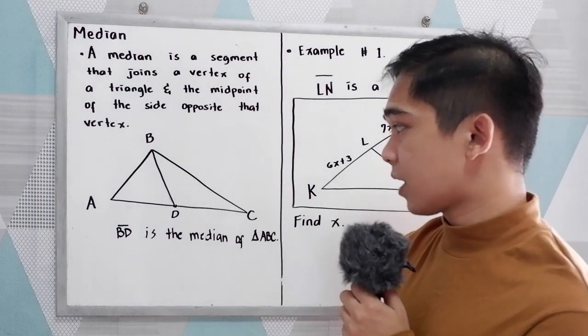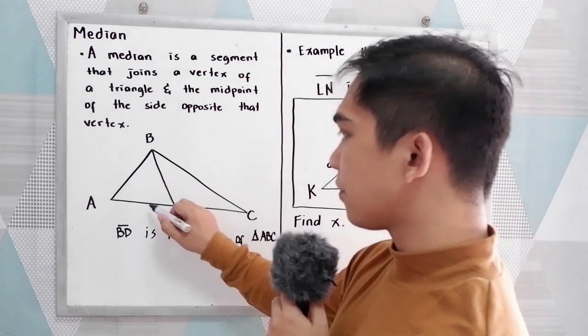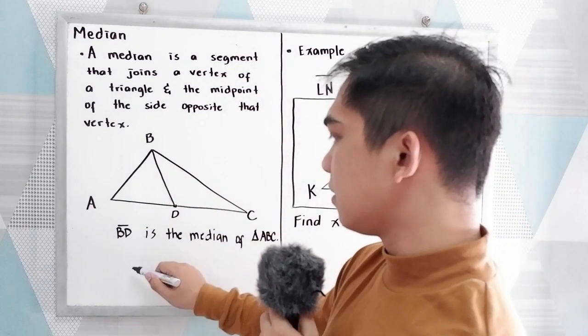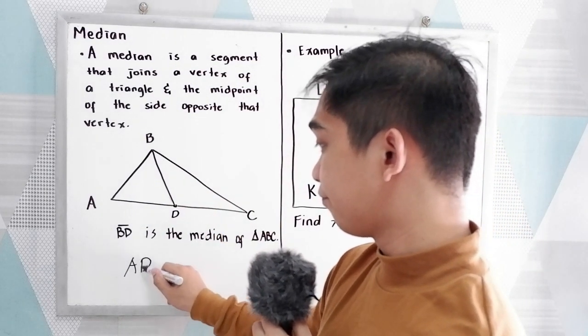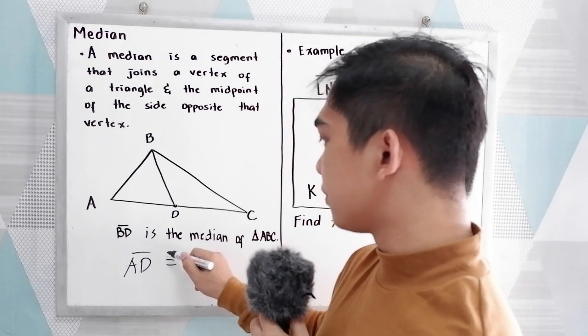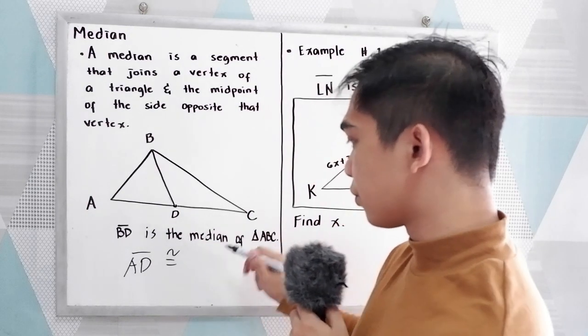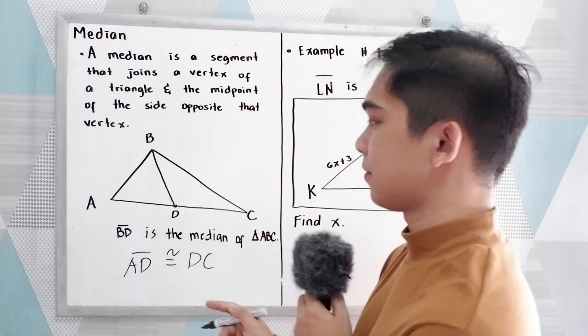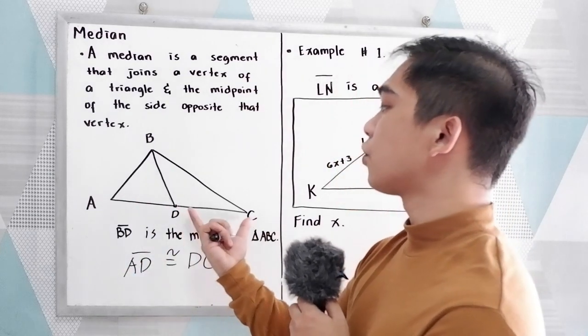Now, what is the use of the median? So that is the median, therefore AD is equal to, or congruent to, DC.